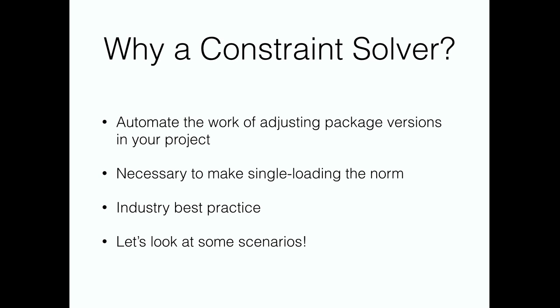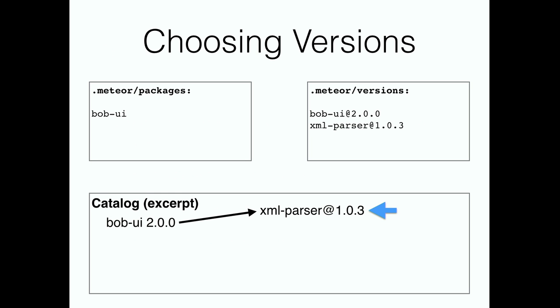In summary, the constraint solver automates the work of adjusting your package versions, it's necessary for single loading, and it's an industry best practice. To show what the constraint solver has to do: your app depends on one package called BobUI, and BobUI depends on another package called XML parser. You've added BobUI and automatically got XML parser. The version solver chooses the latest version of BobUI and takes version 1.0.3 of XML parser, because that's what was asked for.